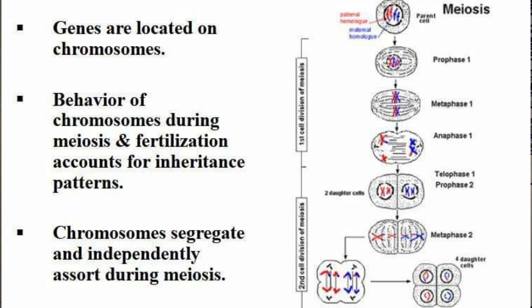Why does the chromosomal theory relate to Mendel's theory? Mendel said factors are in pairs. The reason chromosomes show parallel behavior is that the genes described by Mendel are actually located on chromosomes. If genes are located on chromosomes, chromosomes will show the same behavior. Therefore, the behavior of chromosomes during meiosis and fertilization is responsible for the inheritance pattern.